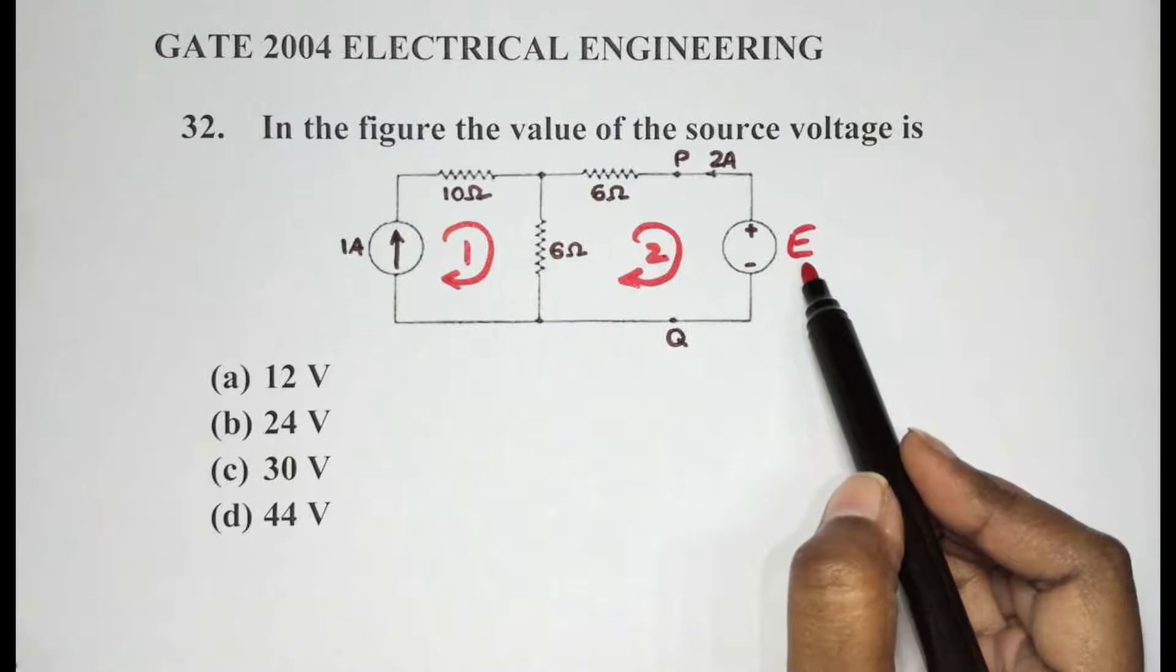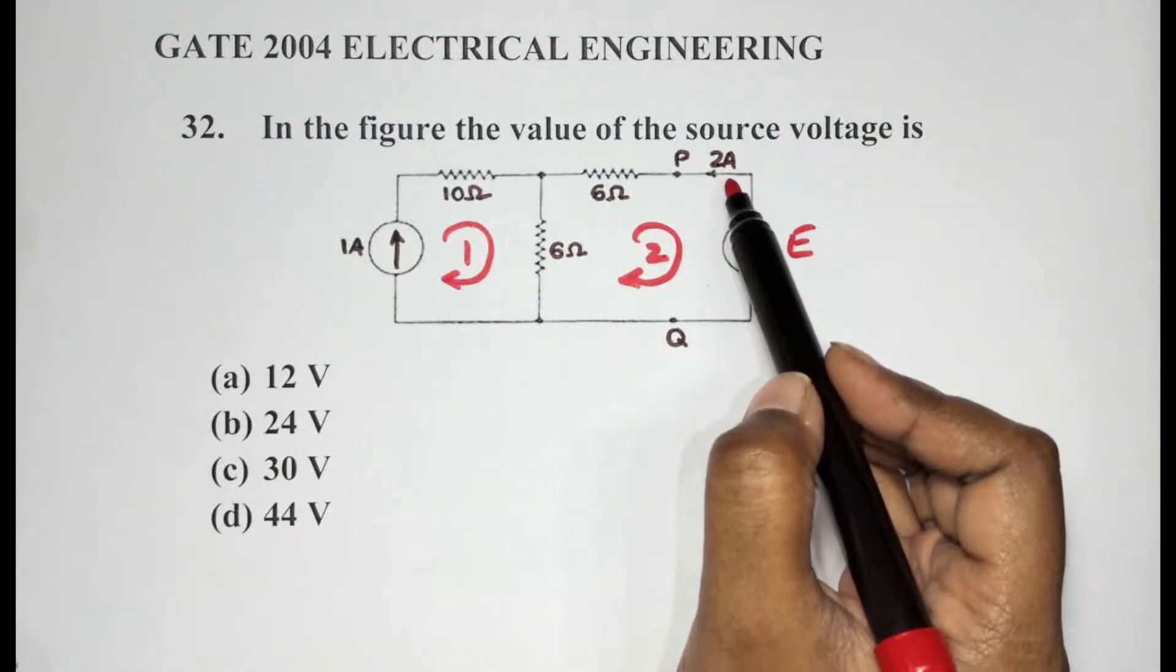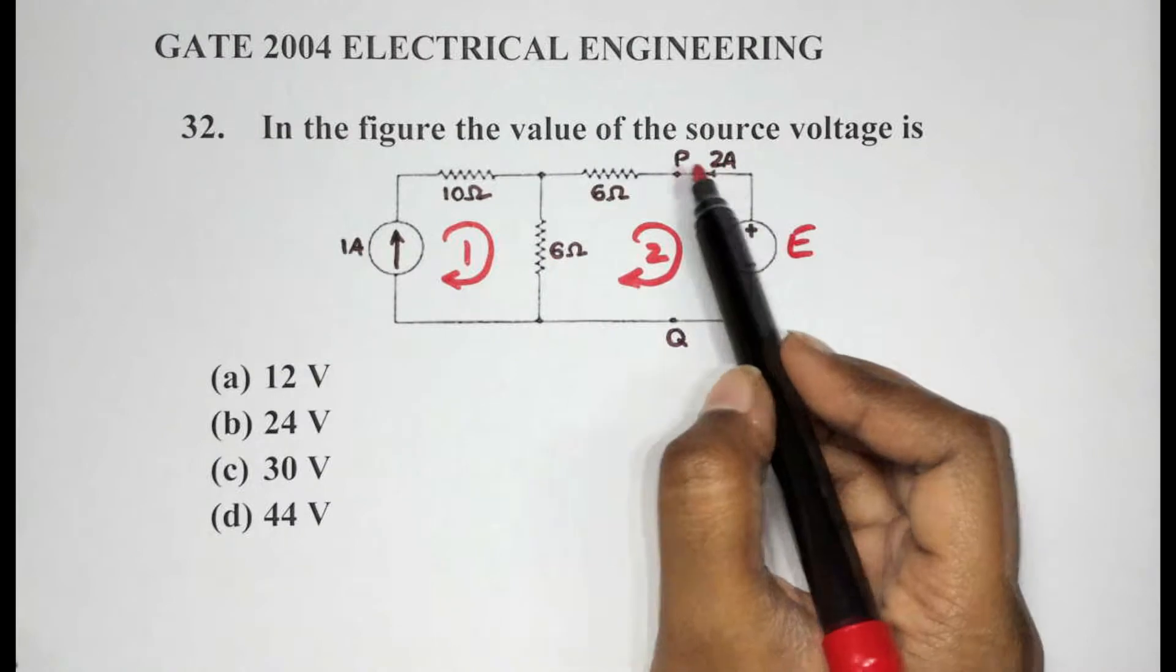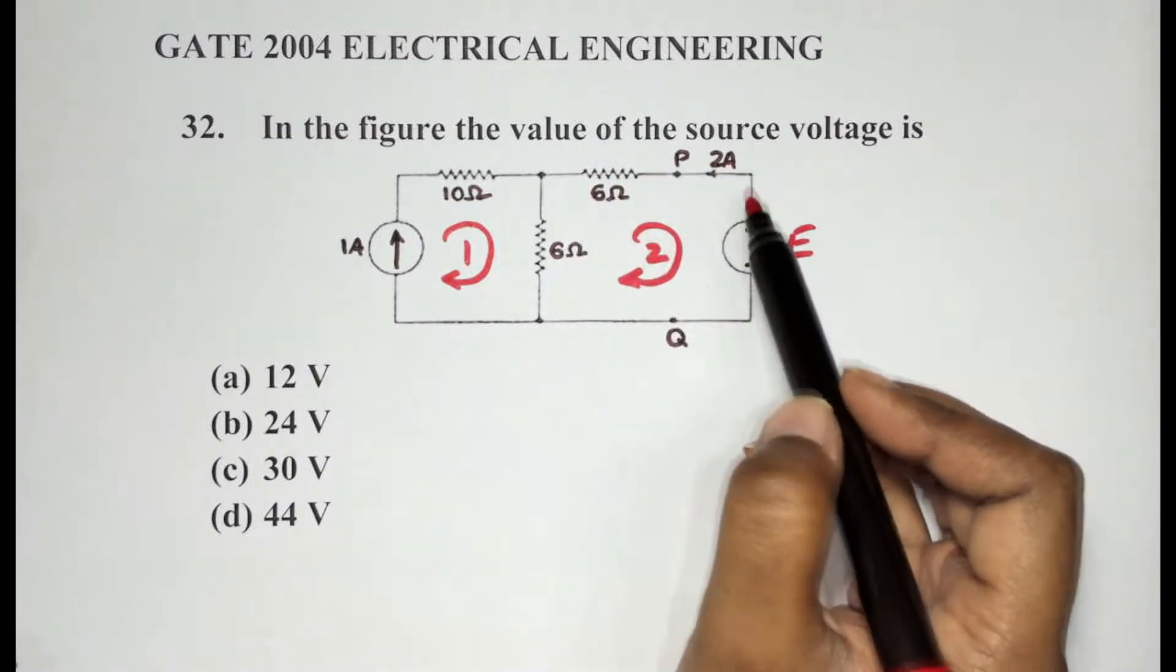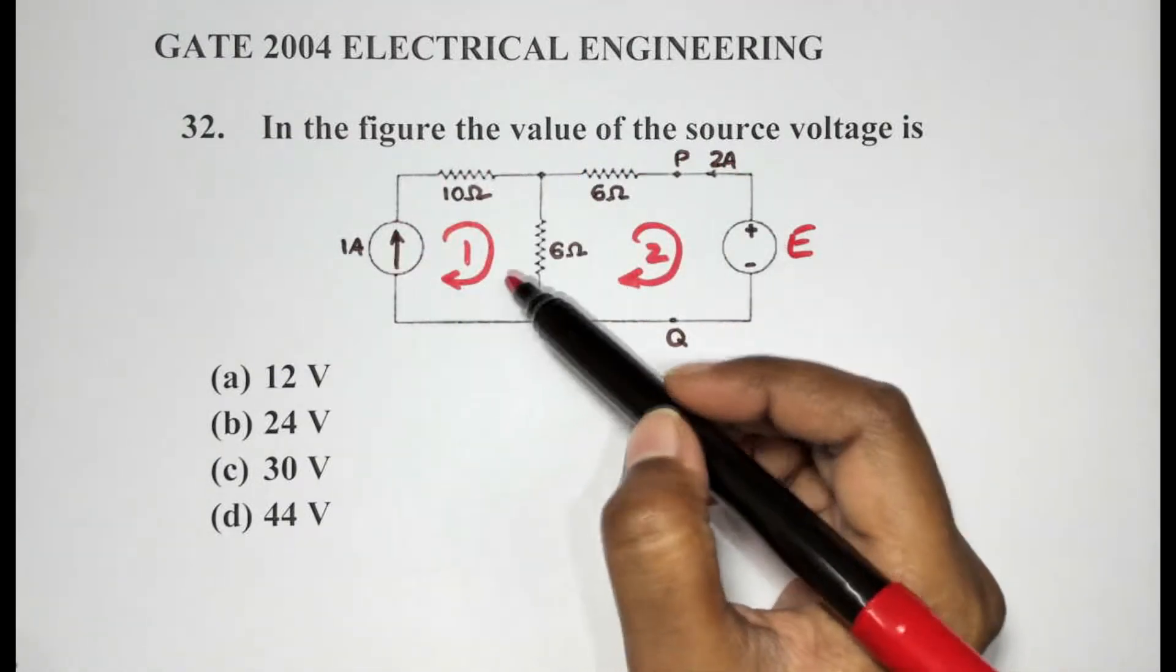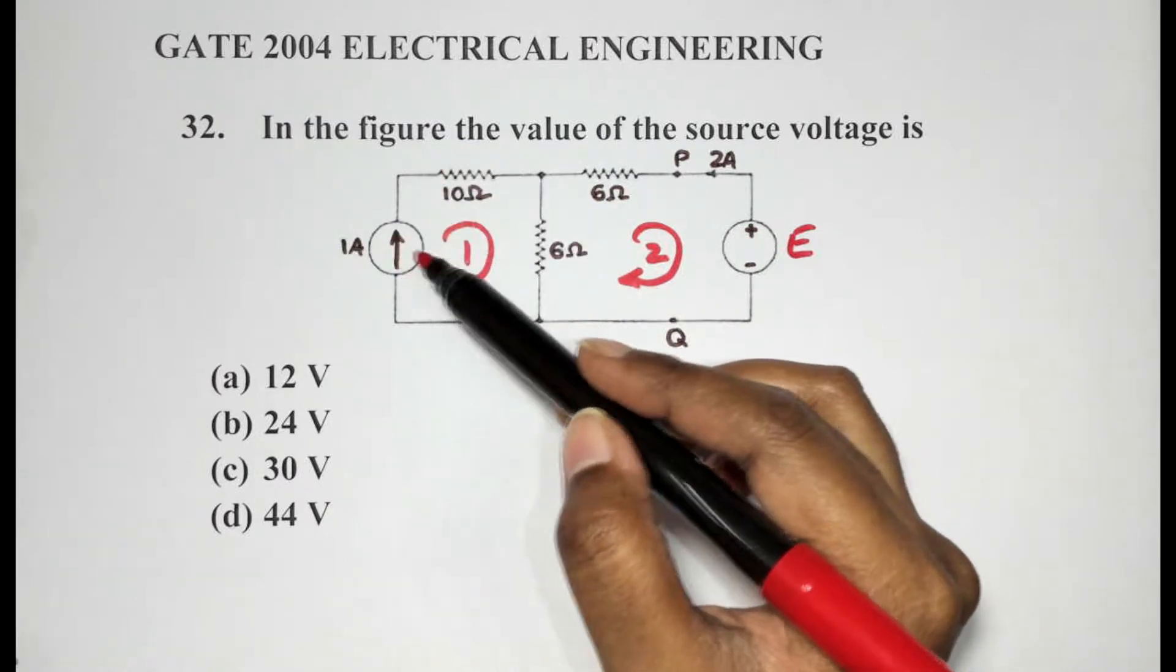Now to find out the value of E, the current has already been given here as 2 amps. This is the current that is passing through this branch here. So we don't have to consider this part at all, though we would have to consider the value of current here while considering this branch here.